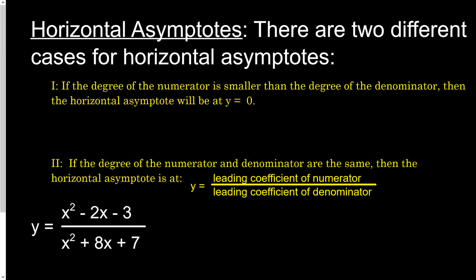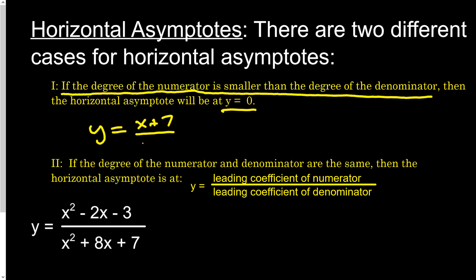Next is the horizontal asymptote. There are two different cases. Case 1: if the degree of the numerator is smaller than the degree of the denominator, the horizontal asymptote will be y equals 0. For example, y equals x plus 7 over x squared plus 3x minus 4 — the degree on top is first, on bottom is second. Since the degree on top is smaller, the horizontal asymptote is y equals 0. As x goes to infinity, the bottom gets much bigger than the top, so the function approaches 0.